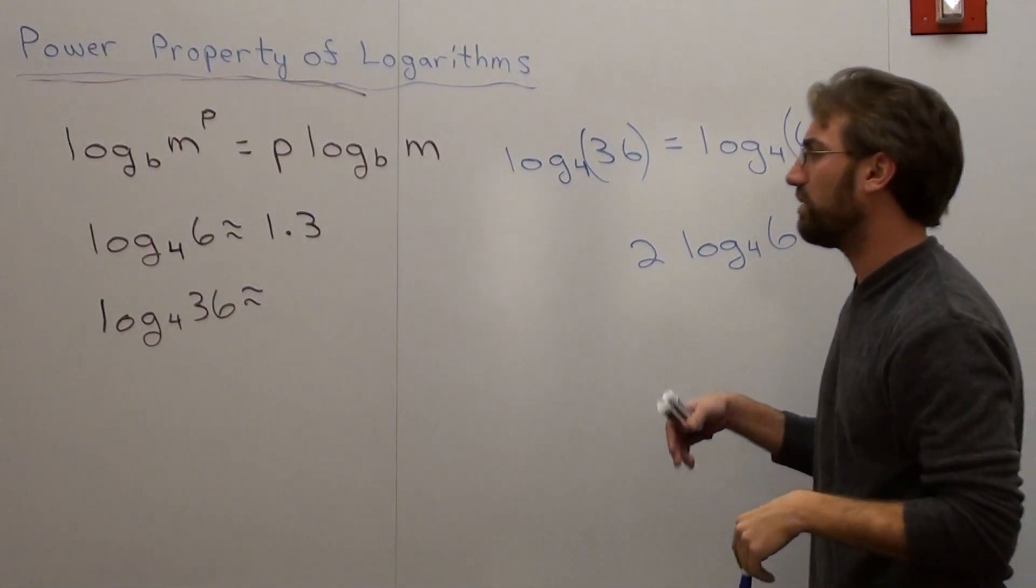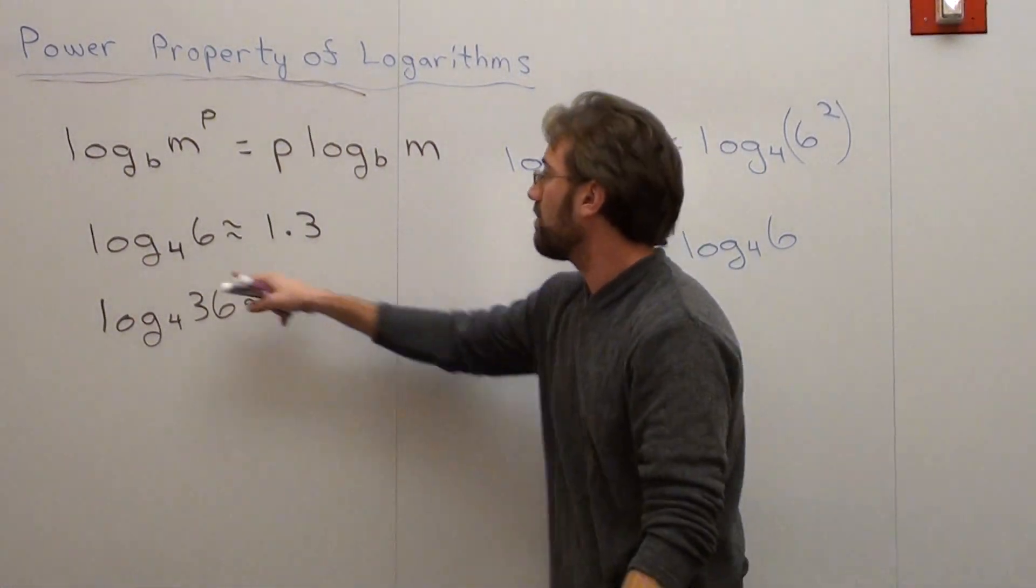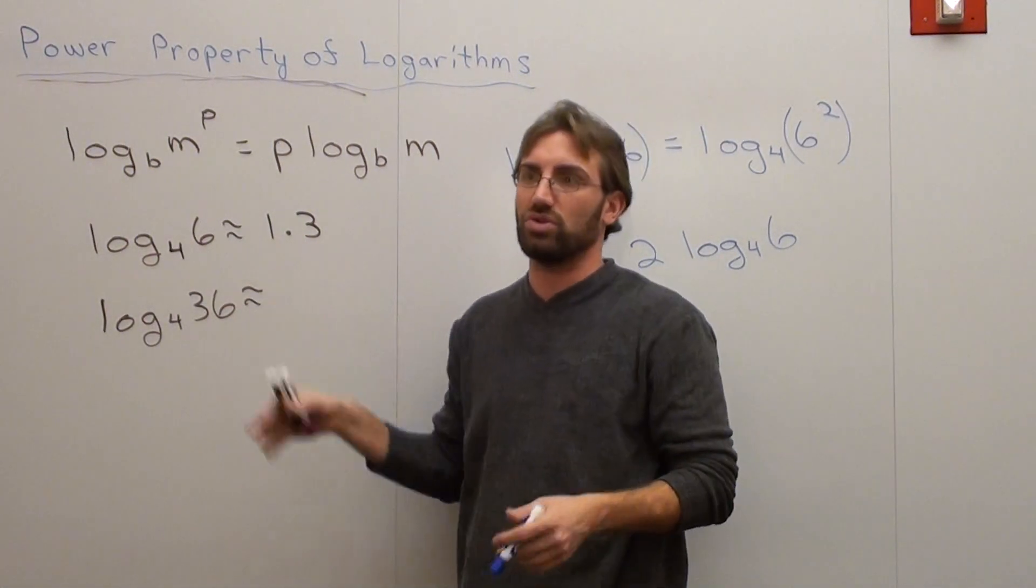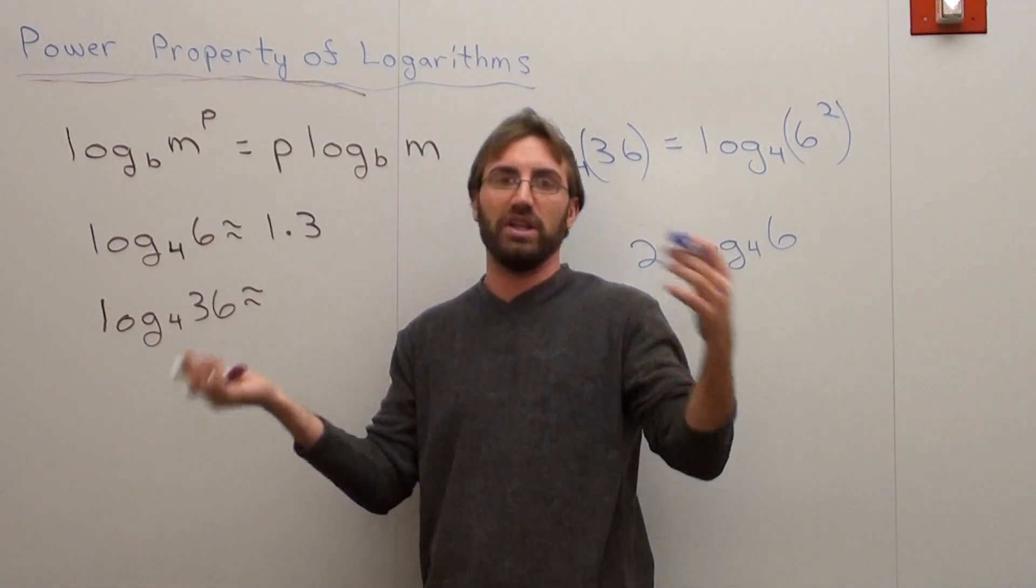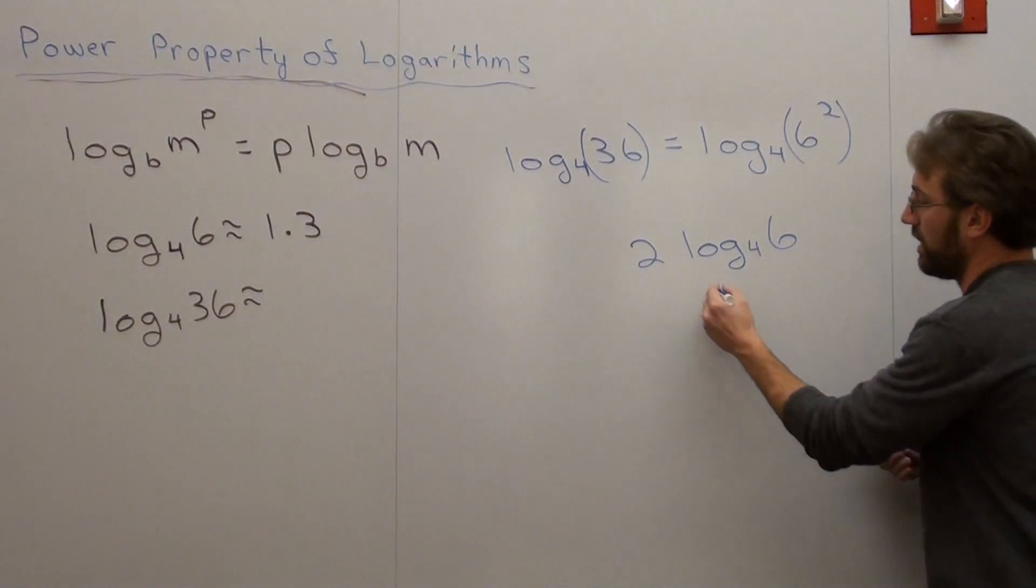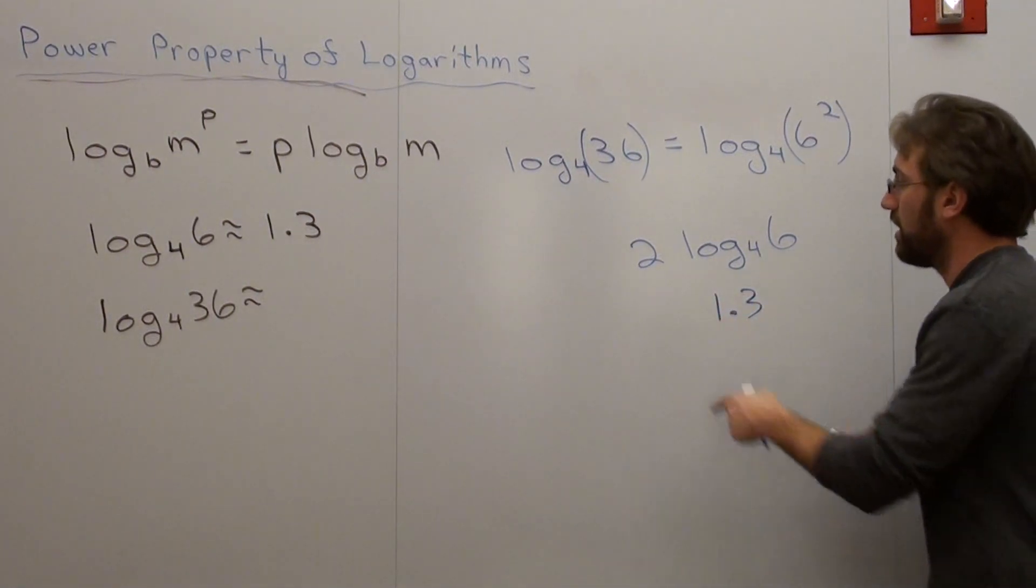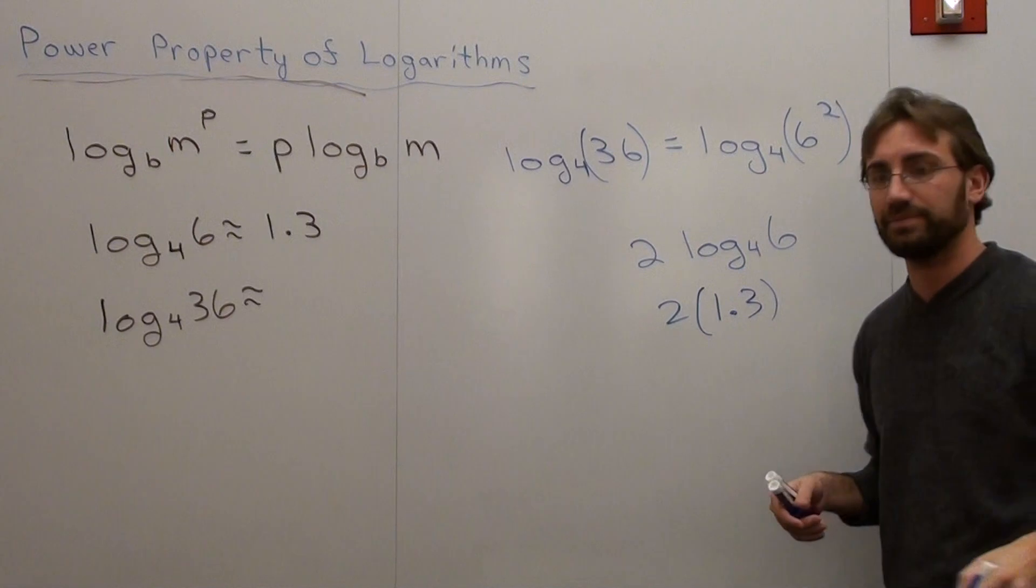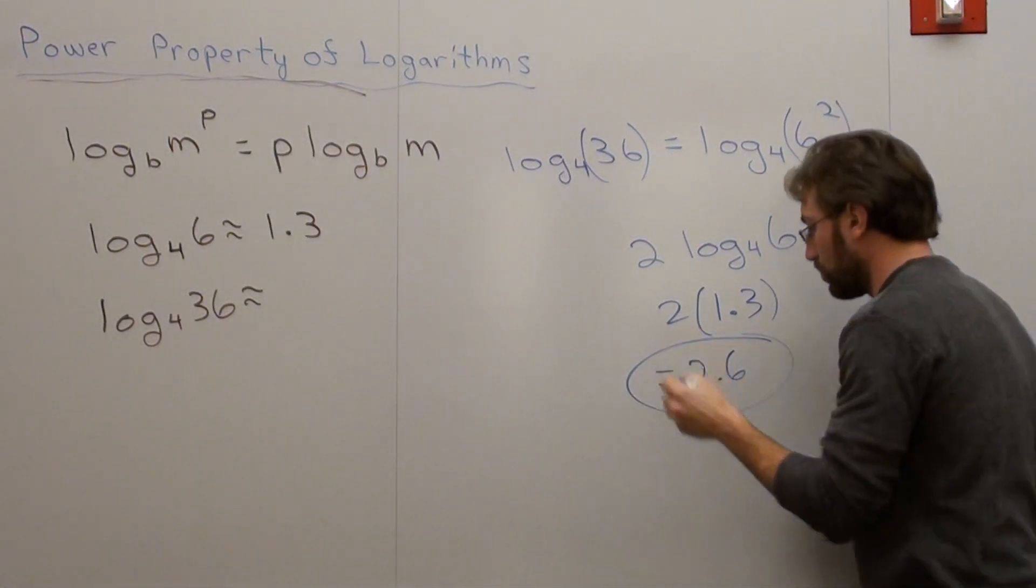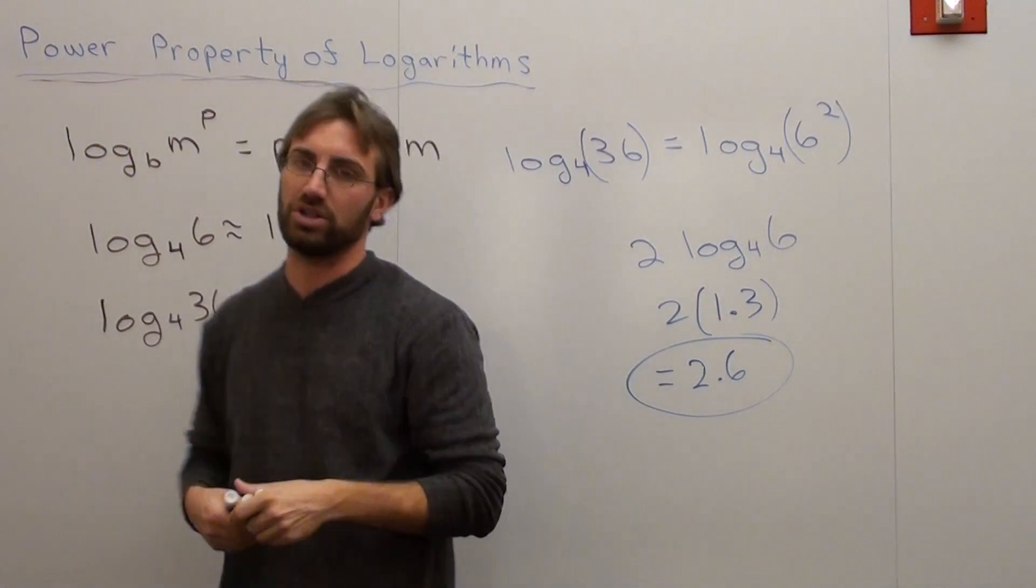And some people are going to say, well, why did we want to get the log base 4 of 6? Because that's what we were given, and we can use this to extract the information that we need to solve the problem. So log base 4 of 6 is actually approximately 1.3, but there's a 2 in front, so it's 2 times 1.3, which is 2.6. And that's pretty much it.